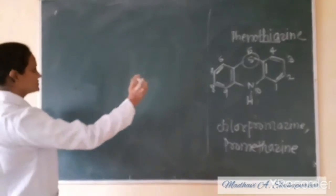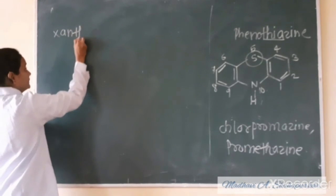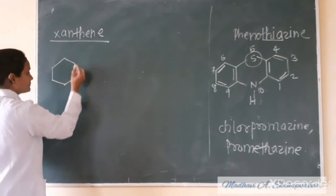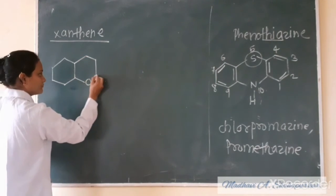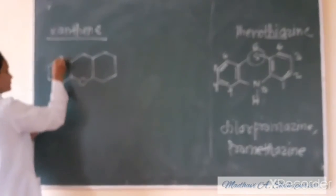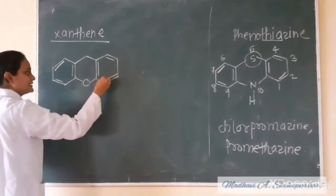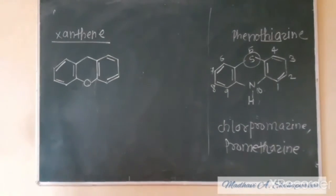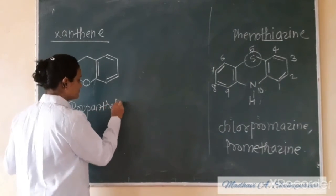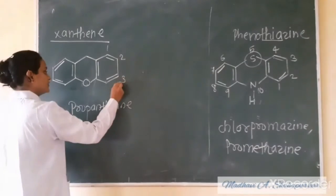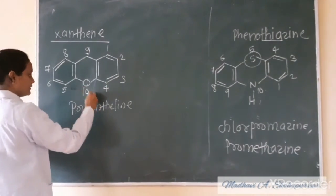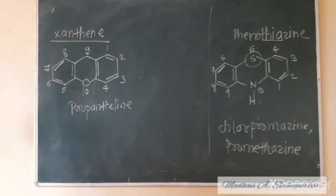So, what happens is we have three rings and the oxygen attack structure. Ten positions. Oxygen attack — example: propantheline. Let me start from here: 1, 2, 3, 4, 5, 6, 7, 8, 9, 10 — ten positions. Oxygen attack. Example: propantheline.